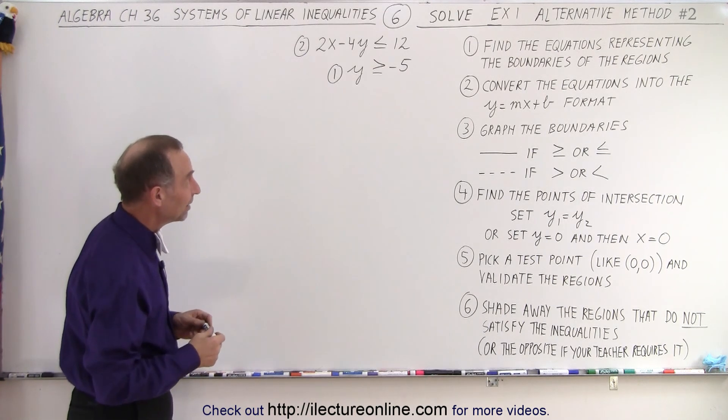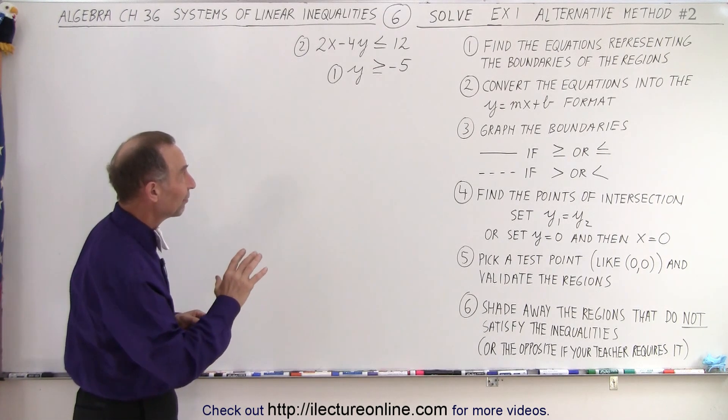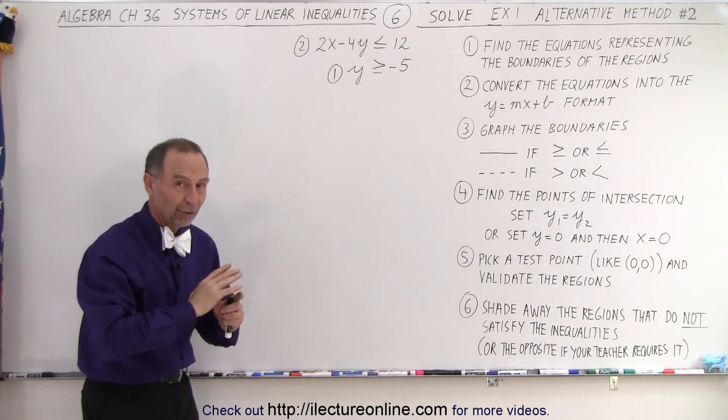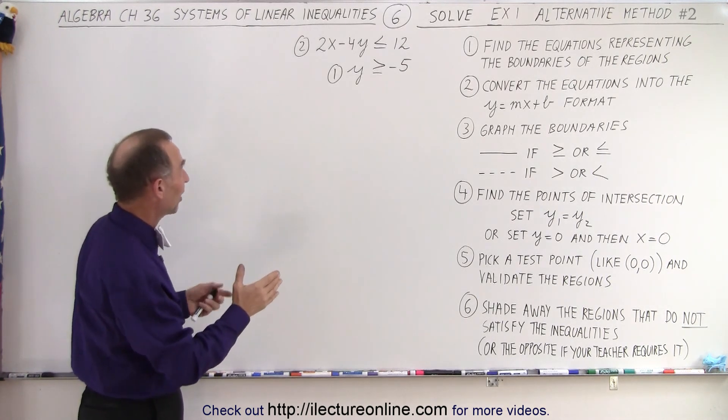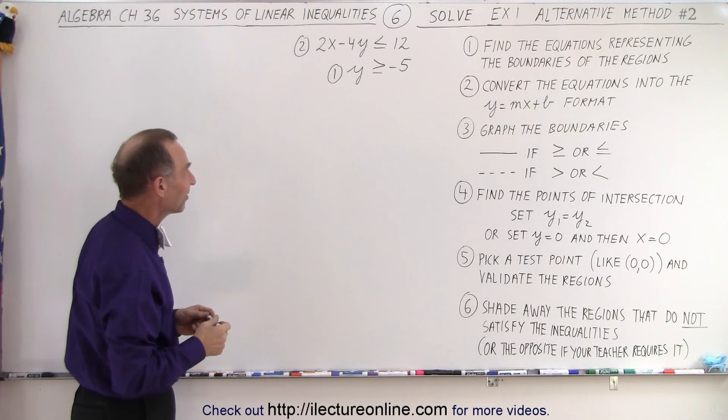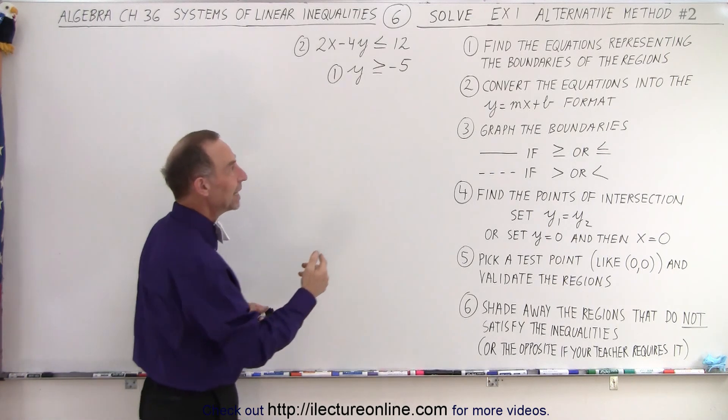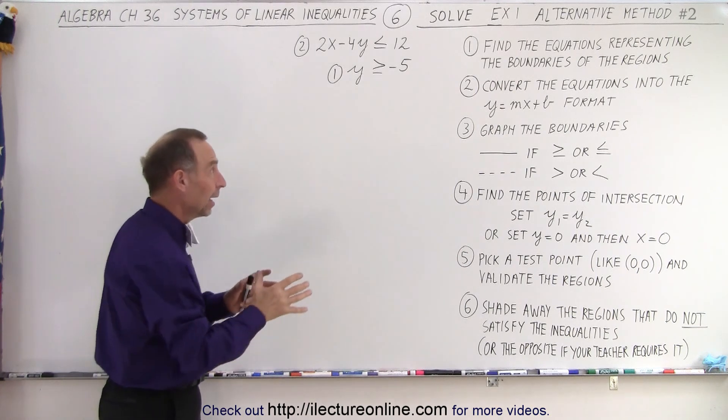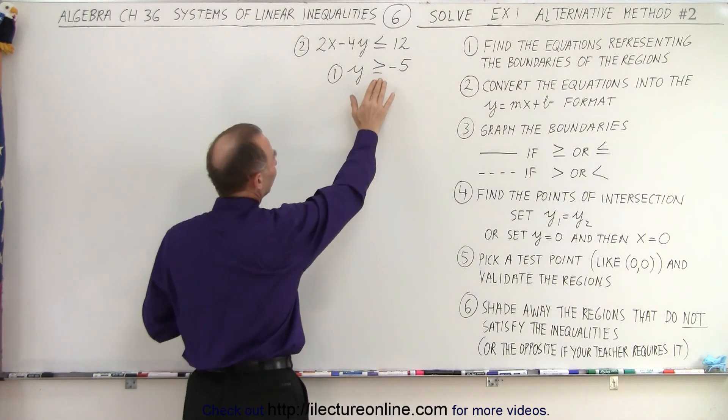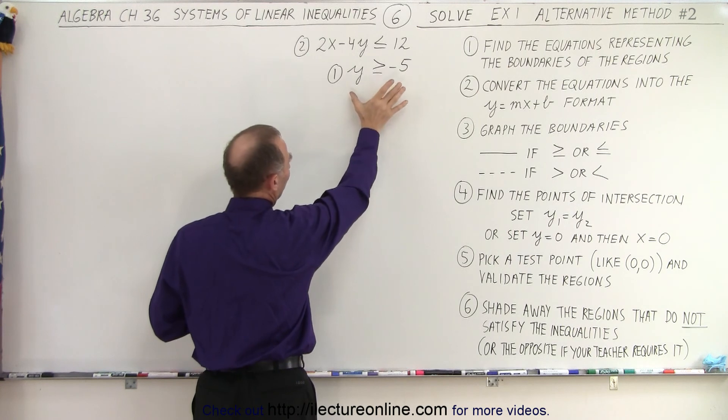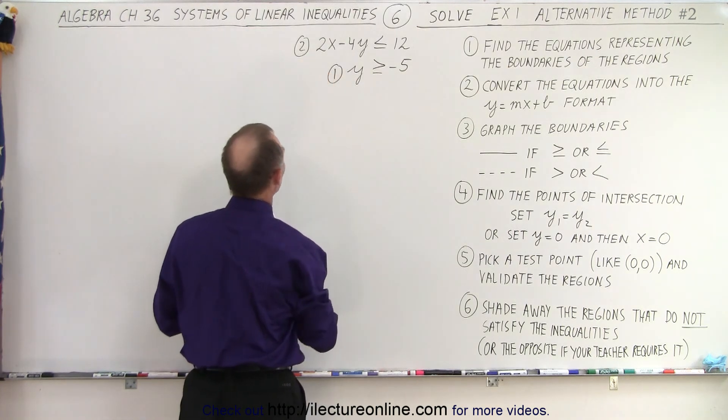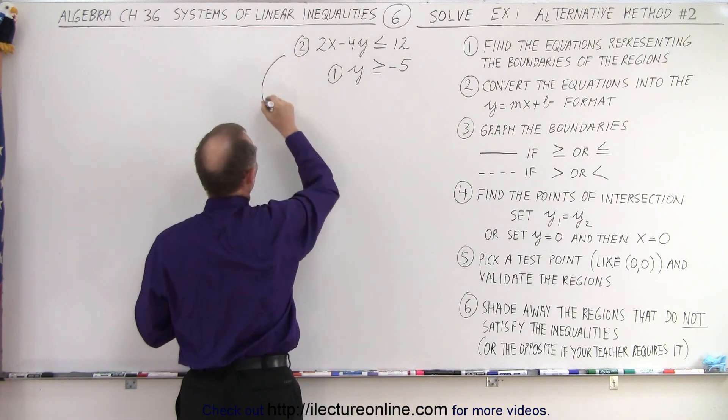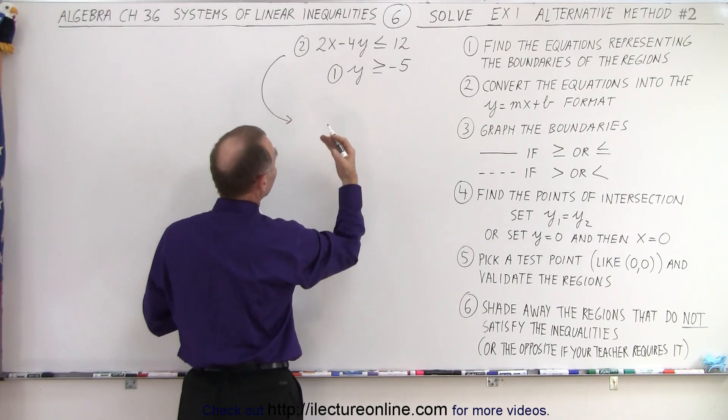Again, we have the same two inequalities. Instead of first solving for the equations and graphing the boundaries, she simply says solve the inequalities as they are, but turn them into the y = mx + b format with an inequality sign instead of an equal sign. We don't have to do that for inequality one—that's already in proper format—but we do have to do it for inequality two.